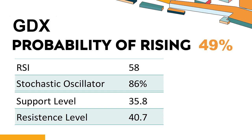GDX's short-term support level is 37.7. If it falls below this level during the session, it will have a chance to test 35.8. GDX's short-term resistance level is 39.8. If it breaks through this level during the session, it will look up to 40.7.